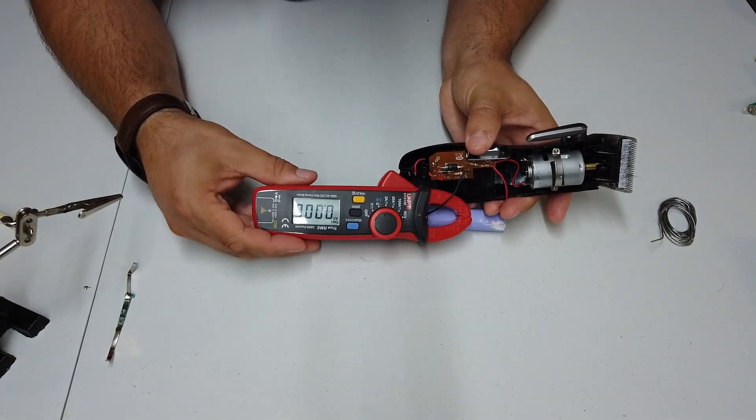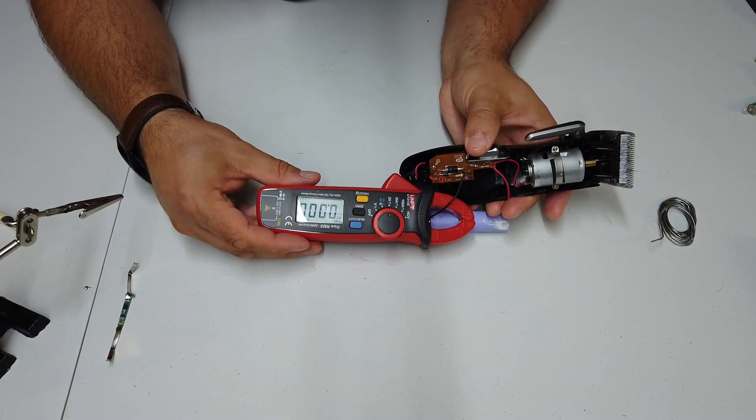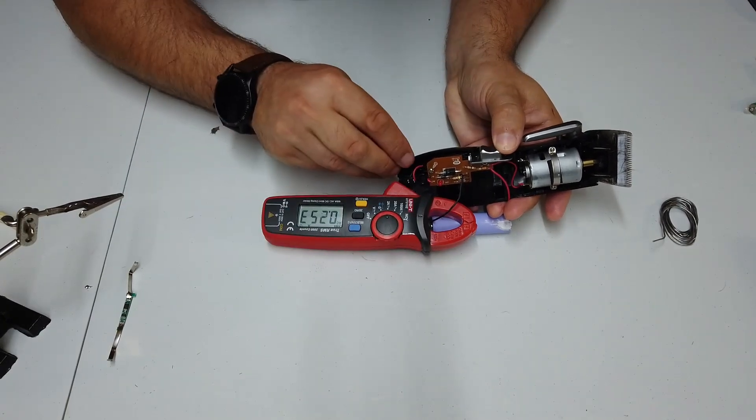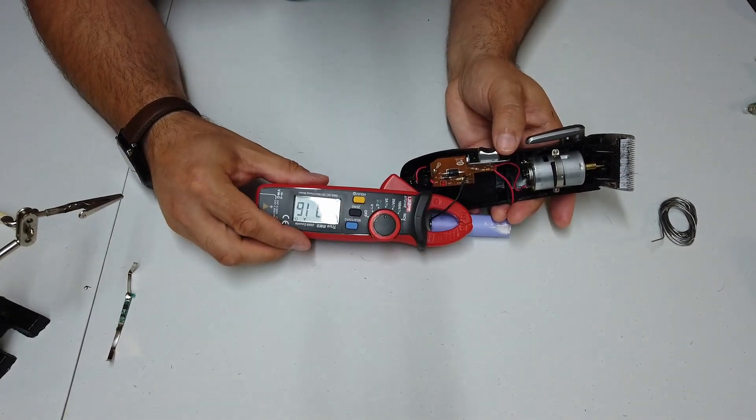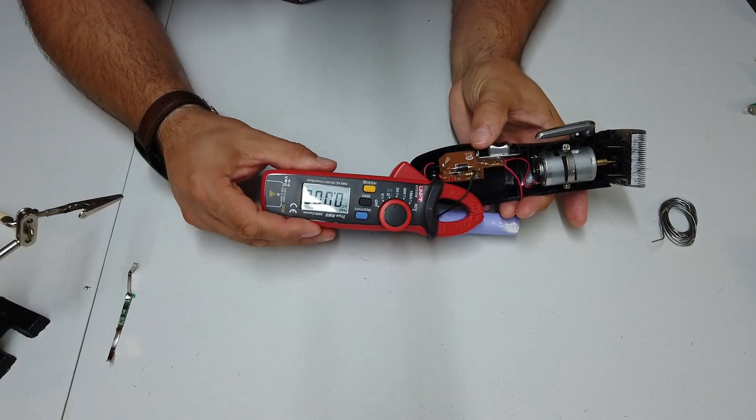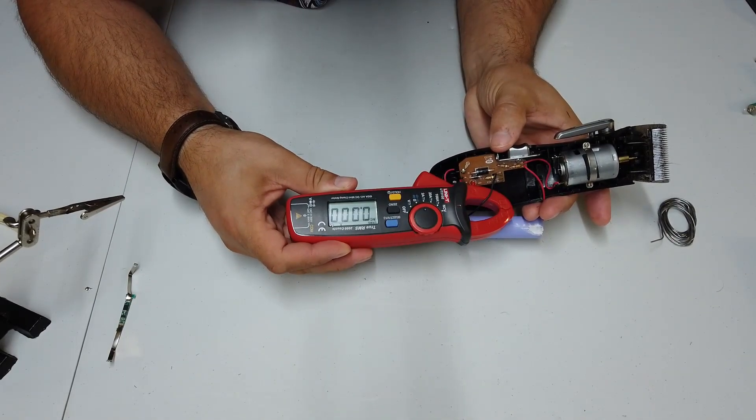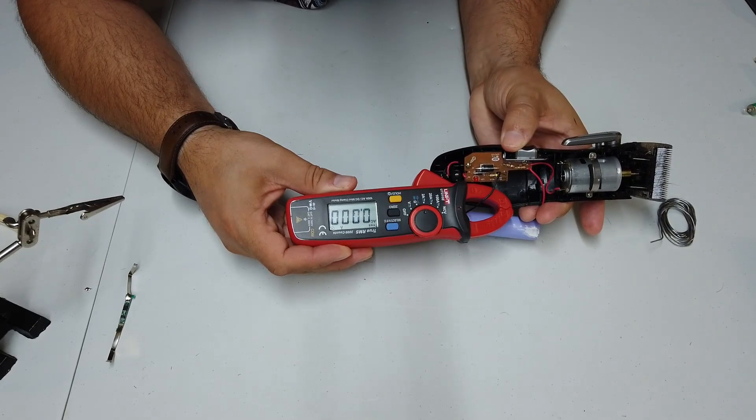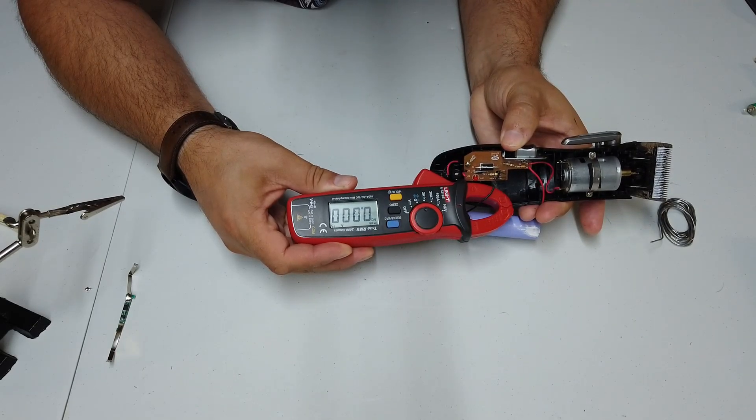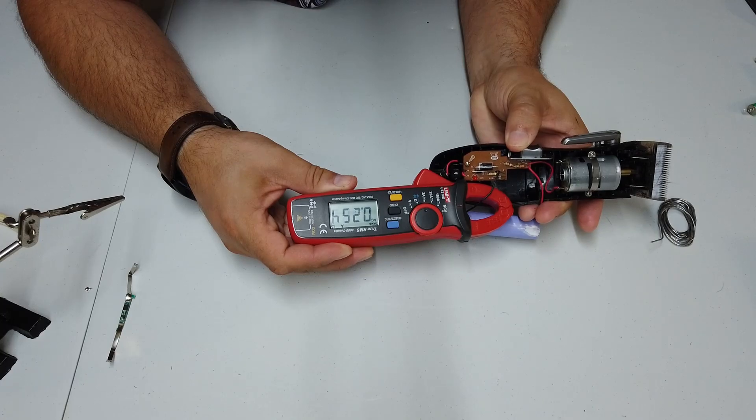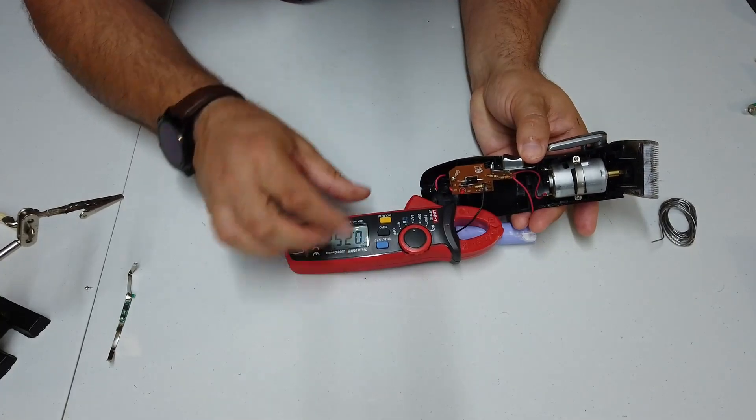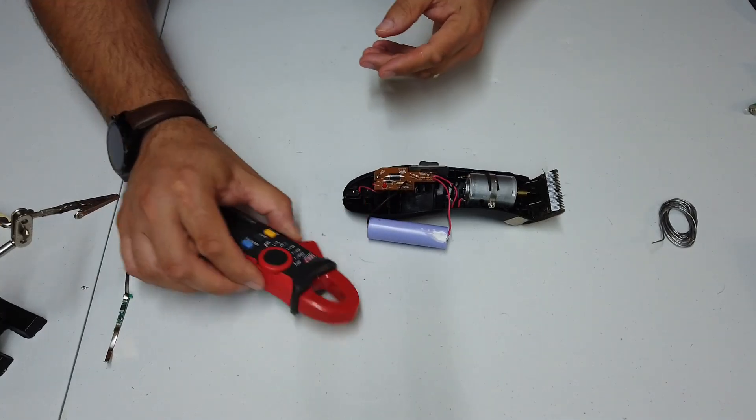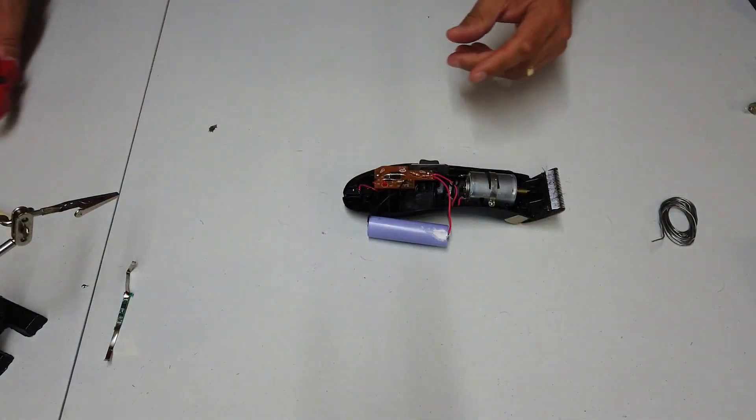But if you watch the meter when I first turn it on, you see that that initial inrush current kicks this meter out at about 1.8 amps, nearly 2 amps. Ready? I'll do it one more time. 1.4. About 1.5 amps. So there we have it. That's quite interesting to see, isn't it?